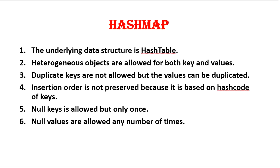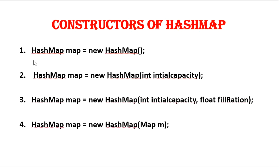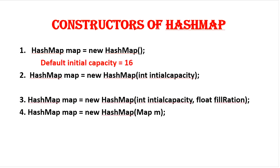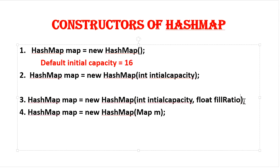Null is allowed as a key but only once, and null values are allowed any number of times. These are the constructors of HashMap. The first is new HashMap() which creates an empty HashMap with default initial capacity of 16 and default fill ratio of 0.75. The second lets you provide your own initial capacity. The third lets you define both initial capacity and custom fill ratio. The fourth converts any map object into a HashMap.